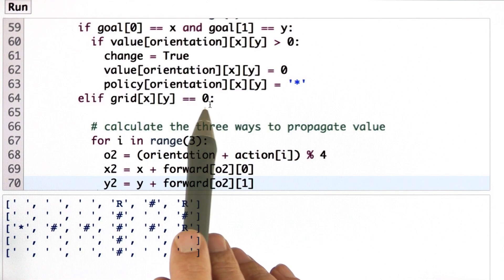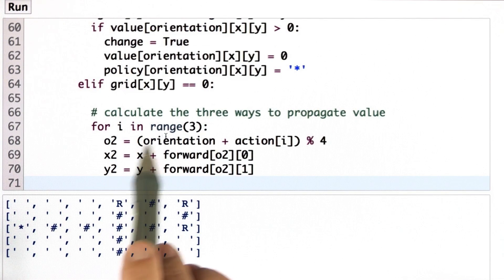Otherwise, if our grid cell is navigable at all, let's go through the three different actions.